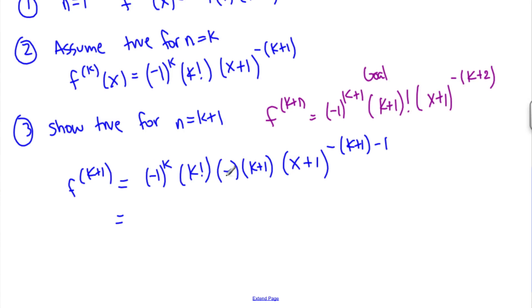Now we have a negative, that's a negative 1. Negative 1 times negative 1 to the k is negative 1 to the k plus 1. k factorial times k plus 1 is k plus 1 factorial. x plus 1 to the, and this can be simplified straight to k plus 2. Negative k plus 2.